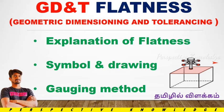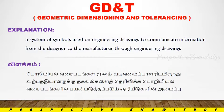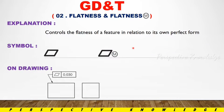If you subscribe to our channel, please click the bell button. GD&T is Geometric Dimensioning and Tolerancing. The main purpose of GD&T is for easy communication. It is a system of symbols used on engineering drawings to communicate information from the designer to the manufacturer.